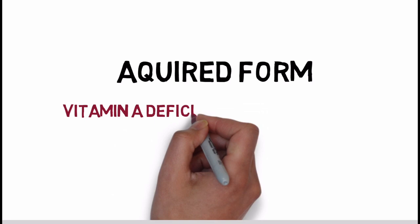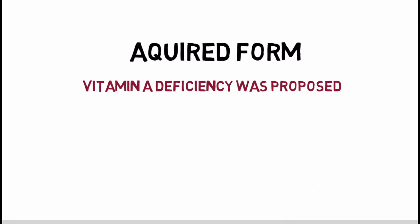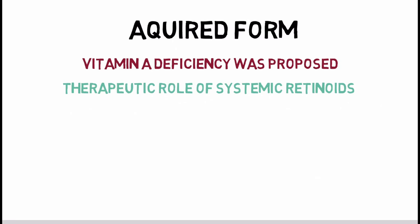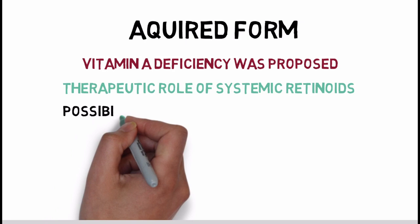Pathogenesis of the acquired form of Pityriasis Rubra Pilaris remains uncertain. Early on, vitamin A deficiency was proposed, but this could not be sustained — patients were given high doses of vitamin A resulting in liver toxicity but no clinical improvement. The therapeutic role of systemic retinoids makes us think that possibly the dysfunction is in the utilization or metabolism of vitamin A.